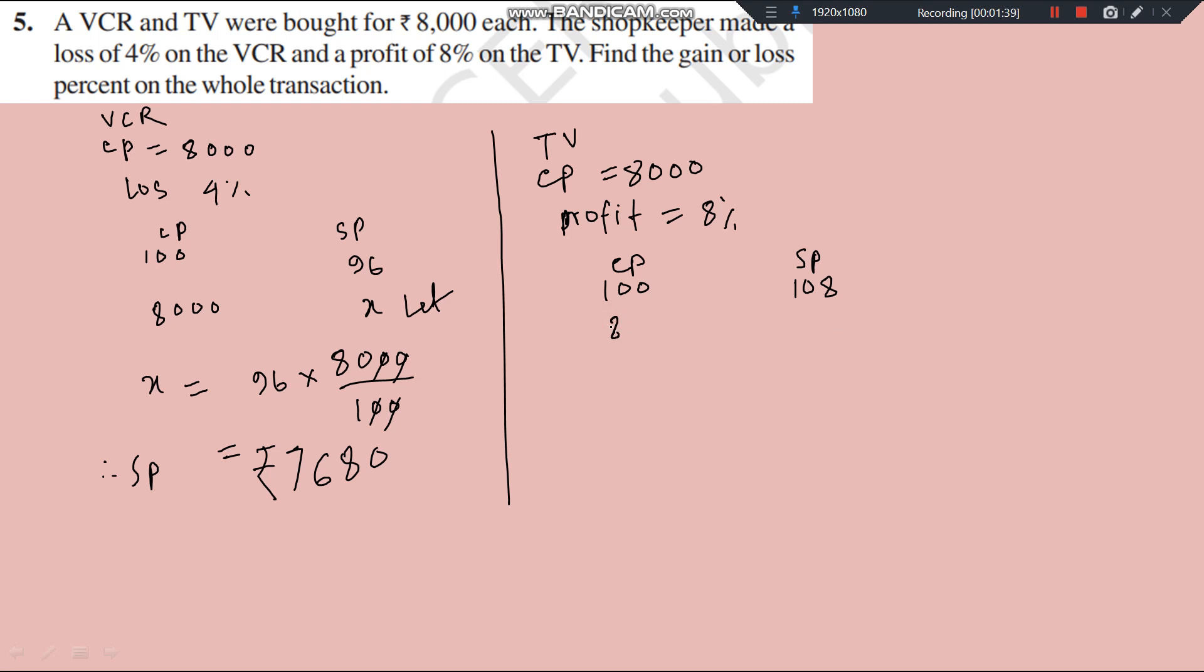Now, CP is given 8000. So, SP is equal to Y I consider. So, Y is equal to 108 into 8000 divided by 100. So, this cancel. This 0, 88064, 8640. So, this is the SP.